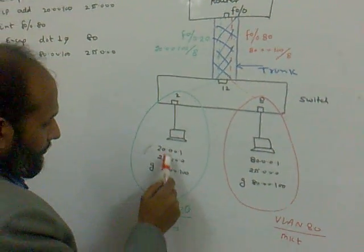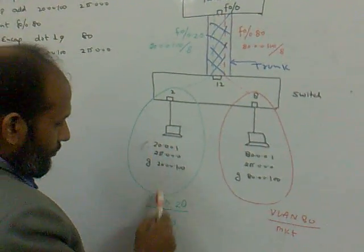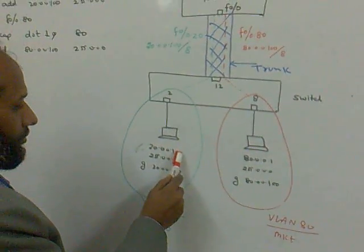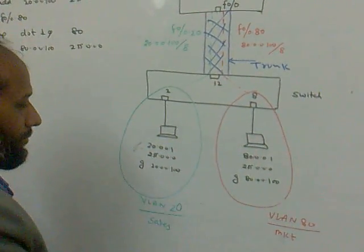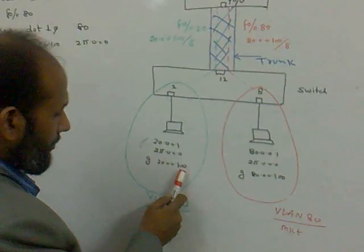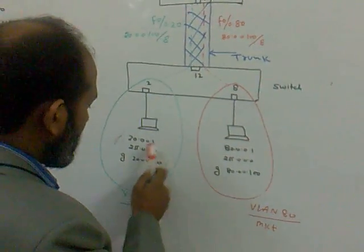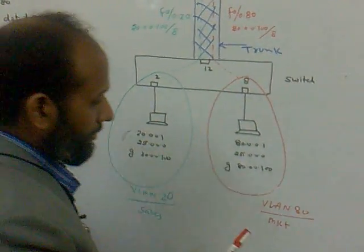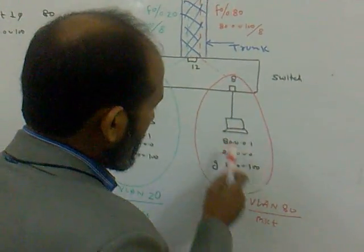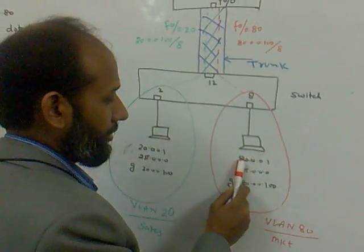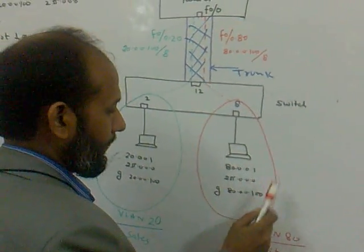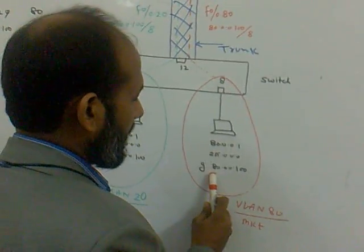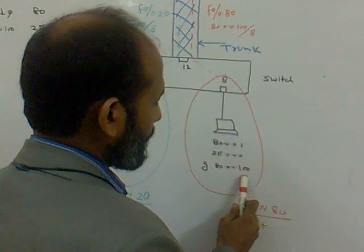The PC belonging to VLAN 20 has the IP address 20.0.0.1, with an 8-bit mask, and the default gateway of that VLAN is 20.0.0.0. The PC belonging to VLAN 80 has the IP address 80.0.0.1, with an 8-bit mask, and the default gateway is 80.0.0.0.